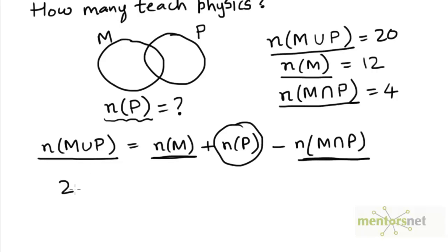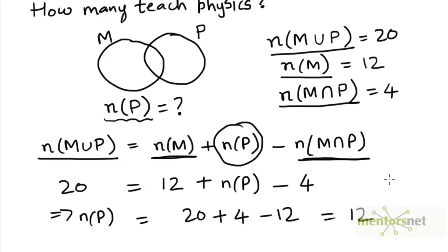So this is given to be 20. This is given to be 12. And this is given to be 4. So n(P) will be 20 plus 4 minus 12. That's 24 minus 12. So there are 12 teachers who teach physics.